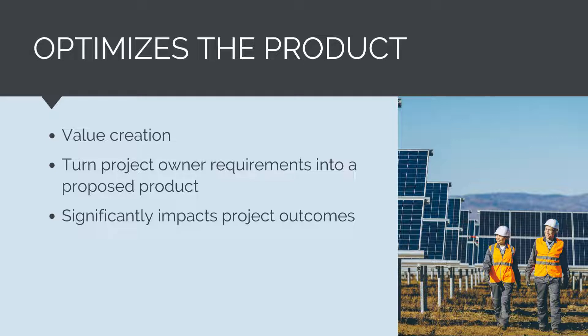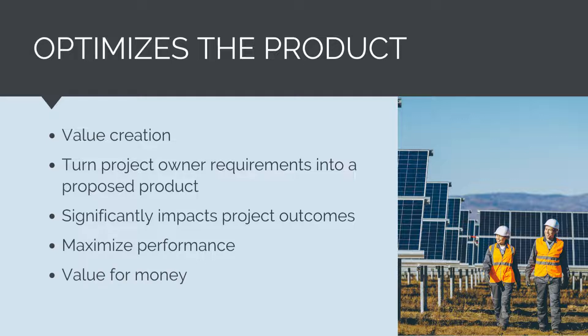Decisions are made like what type of panel to use, what on-site facilities are required for the maintenance teams, what sort of security fencing and systems are needed, and what sort of switchgear provides the optimal reliability levels. These decisions, if made correctly, will optimize the product's performance and deliver the best value for money solution to the project. If they are made badly, then the product will not properly fulfill the project owner's requirements.